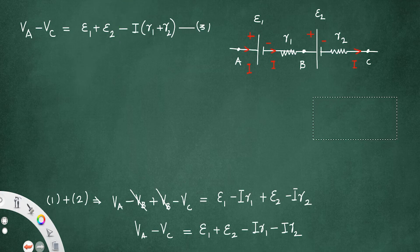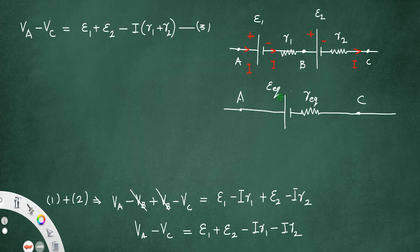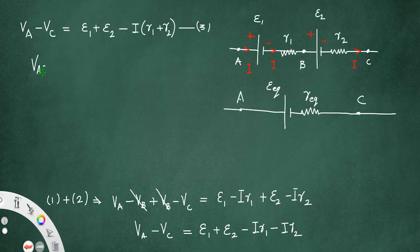Now suppose I remove these two cells and between points A and C I connect a single cell having EMF E-equivalent and internal resistance R-equivalent, such that this single cell gives the same effect as the series combination of the two cells — meaning the same current flows. From this circuit, VAC equals VA minus VC equals E1 plus E2 minus I times (R1 plus R2). Let us call that equation number 4.